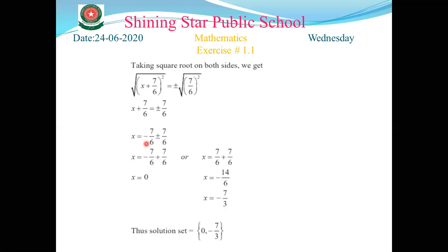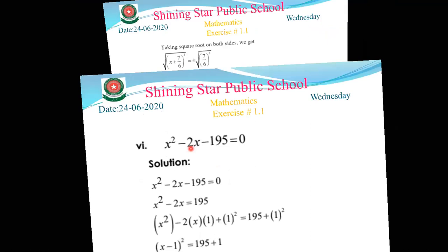The seventh step: simplification. x = -7/6 + 7/6 = 0, and x = -7/6 - 7/6 = -14/6 = -7/3. So the solution set is {0, -7/3}.